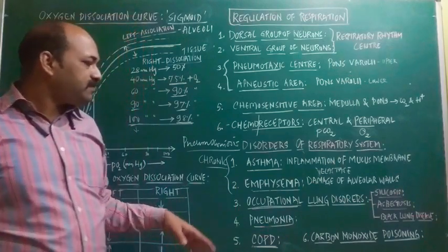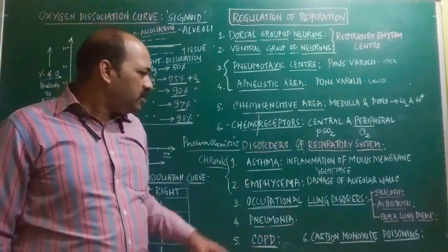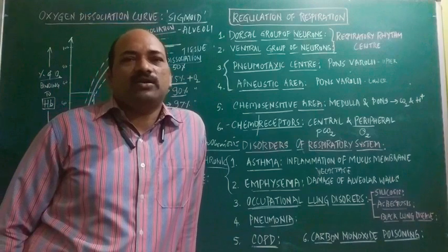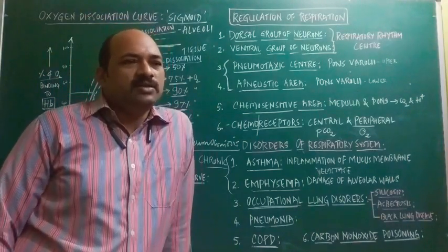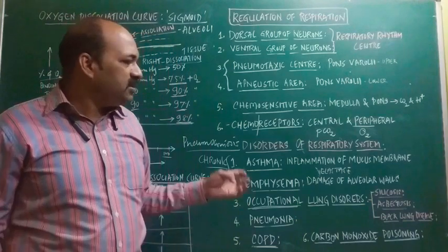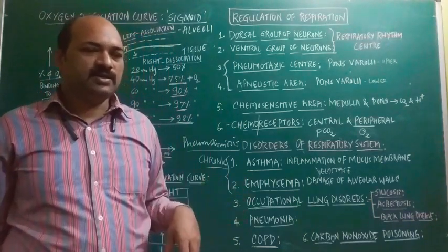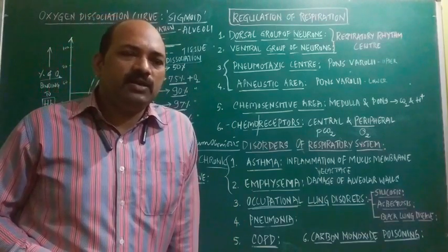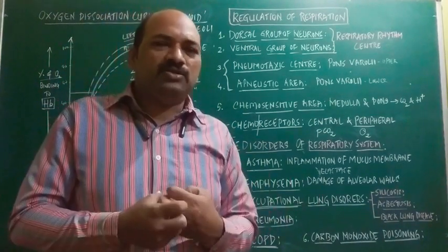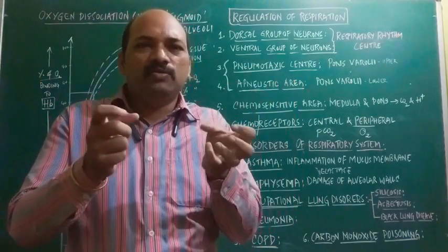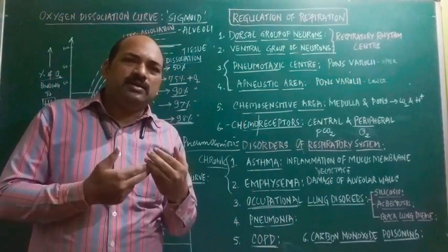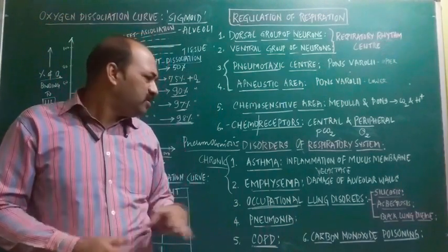Next is pneumonia. Pneumonia is a respiratory disorder associated with infection, which can occur by Streptococcus pneumoniae as well as Haemophilus influenzae. When these bacteria enter the respiratory system, they invade and cause inflammation of the alveoli and alveolar membrane. When the damage occurs, mucus-like substance and pus start accumulating in the alveoli, causing a problem for the exchange of gases. That is pneumonia.